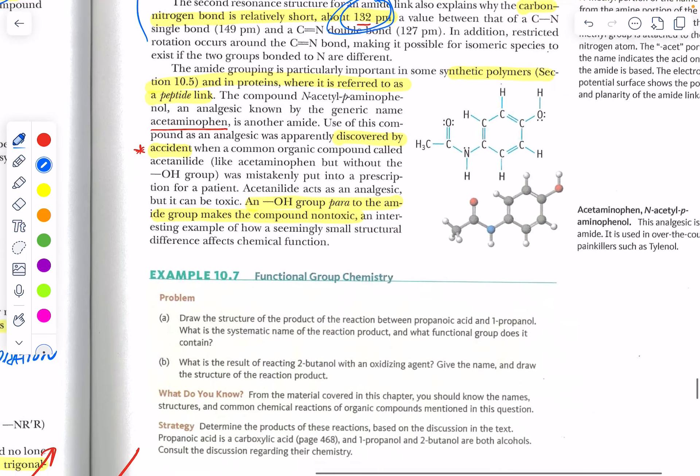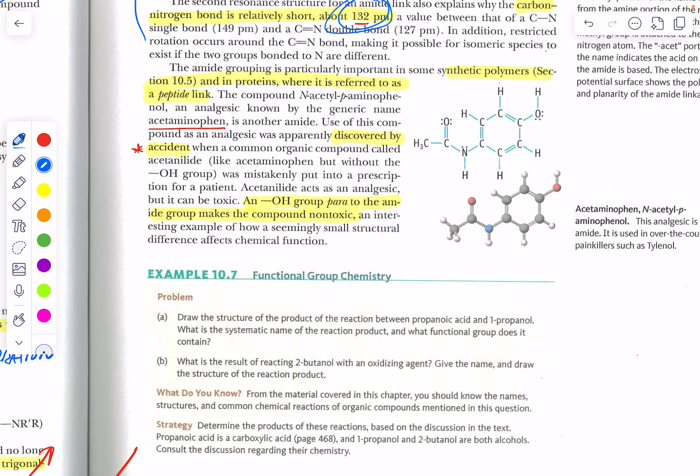We can also synthesize amides in big long chains using a peptide link and peptide links are important in proteins and in amides and these when you have long chains of them you get polypeptides as shortened chains that make up your proteins and this was discovered. Acetaminophen was discovered by accident and I want to mention the word serendipity.